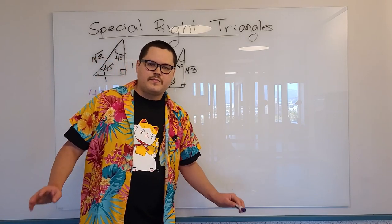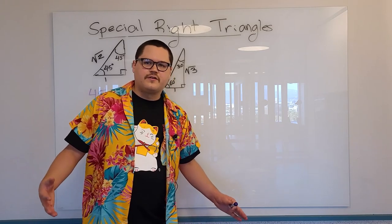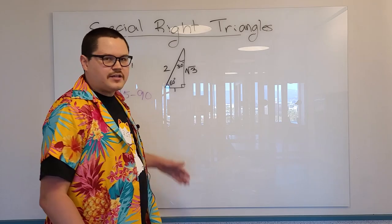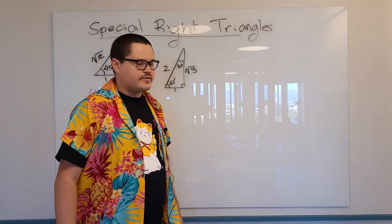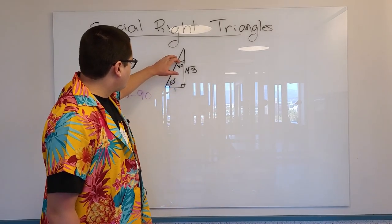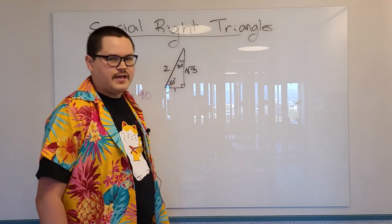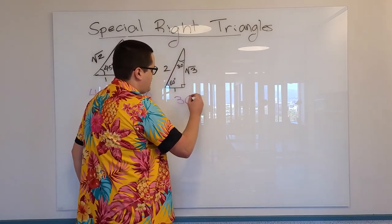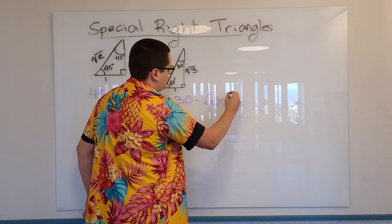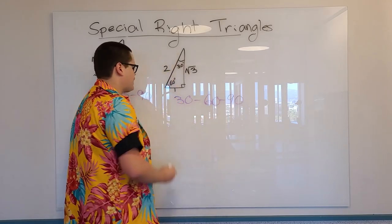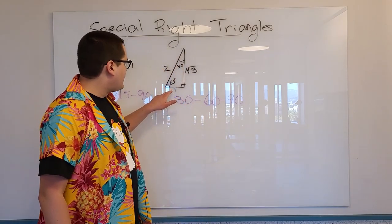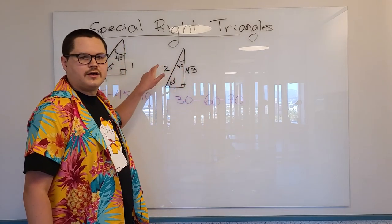The second type of special right triangle is called 30-60-90. Why is it called that? Because those are the angle measures. You have 30-60-90. And what are the side length ratios? Well, they're 1 to square root of 3 to 2.